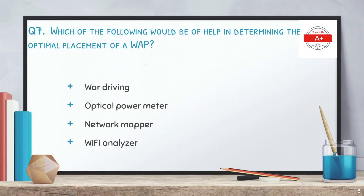Question 7: which of the following would be of help in determining the optimal placement of a wireless access point? Options are war driving, optical power meter, network mapper, and Wi-Fi analyzer. The correct answer is again the Wi-Fi analyzer.